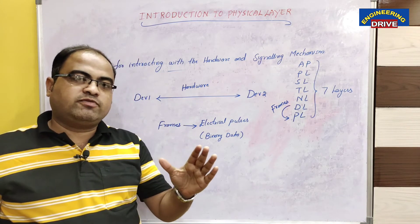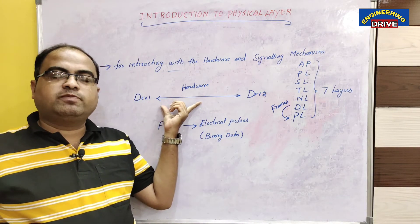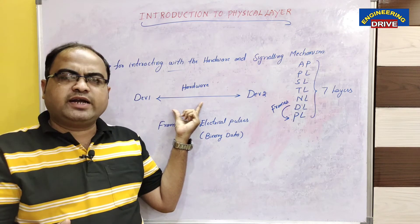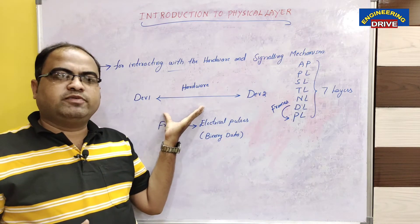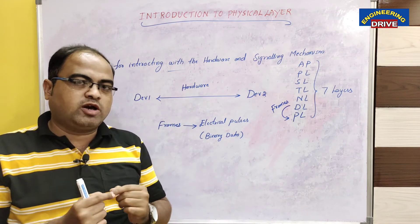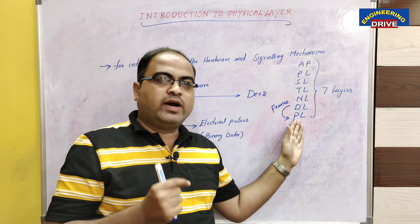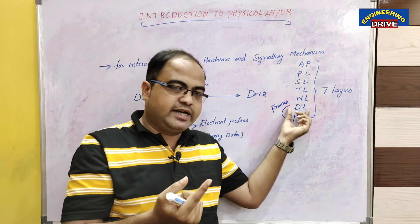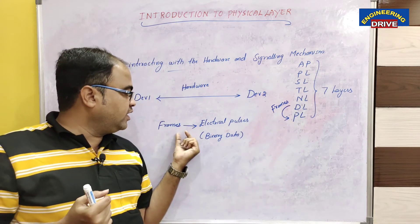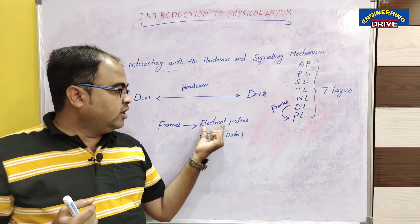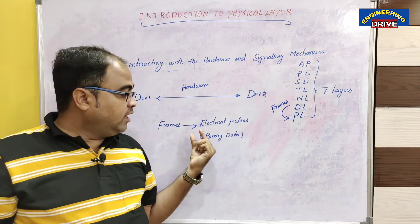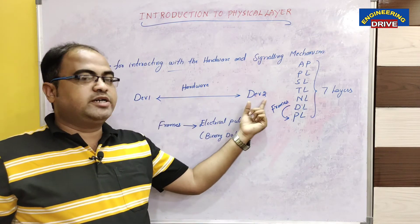The first job of physical layer is it is responsible for providing the hardware between the communicating devices. That hardware can be the cabling or wiring used between the devices to establish communication. One more important role is that physical layer will provide services to the data link layer, which gives frames to the physical layer. Physical layer will take these frames, convert them into electrical pulses — which is nothing but binary data.